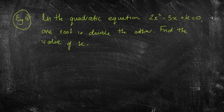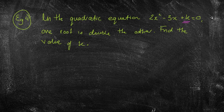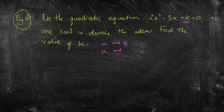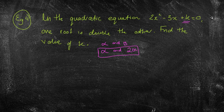The last question is one of the more challenging ones. In the quadratic equation 2x squared minus 3x plus k equals 0, one root is double the other. Find the value of k. If one root is alpha, the other is 2 alpha — for example, if alpha is 2 then 2 alpha is 4, if alpha is 3 then 2 alpha is 6. So our two roots are alpha and 2 alpha.